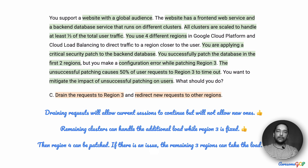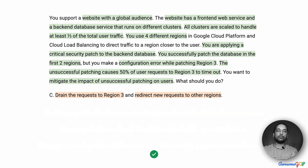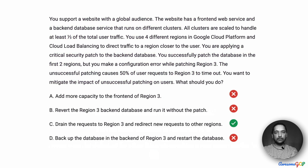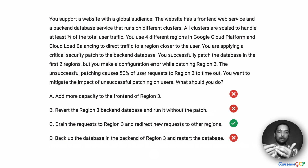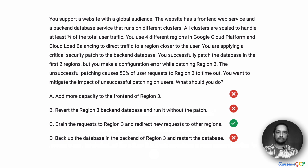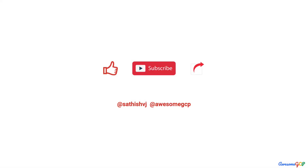With that, we have a complete solution to take care of the situation and bring us back to a working condition. Therefore our best answer for this is option C, which is to drain the requests in region 3, and while that is happening and we are patching the database, redirect new requests to other regions. If you're interested in picking up more learning on Google Cloud, go ahead and subscribe right away.